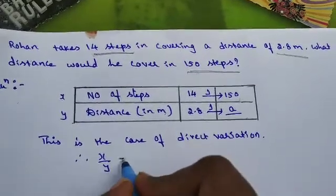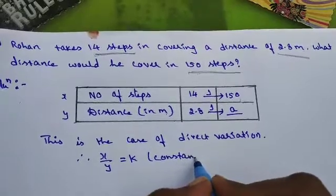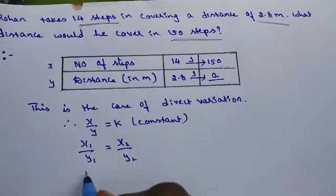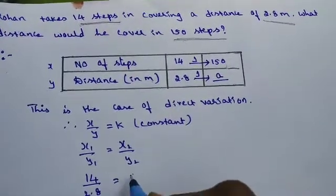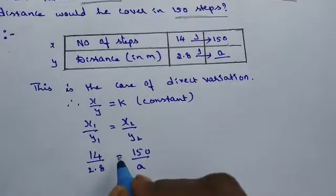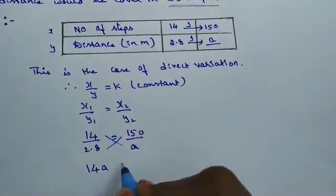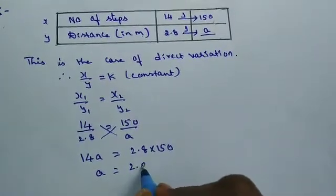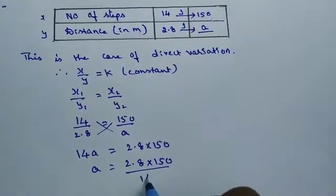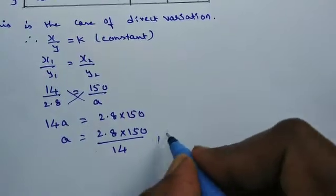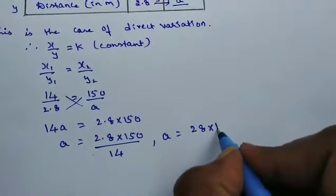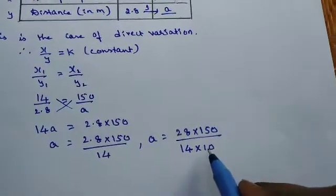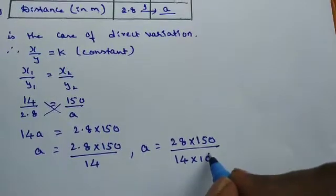Therefore x by y equal to k which is nothing but constant. Then x1 by y1 equal to x2 by y2. Then substitute the values 14 by 2.8 equal to 150 by a. Cross multiply. 14 into a equal to 2.8 into 150. Don't go for multiplication of these two. Then a equal to 2.8 into 150 divided by 14. Let me remove the decimal point first. That is a equal to 28 into 150 divided by 14 into 10. Because after decimal point there is one number. So divide by 10 in the denominator.